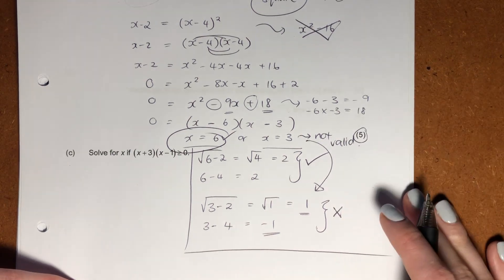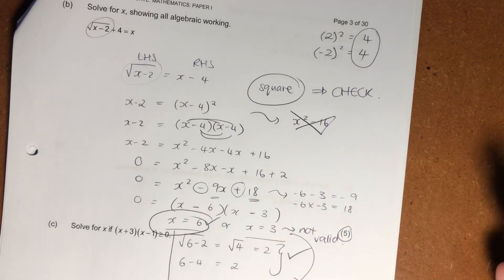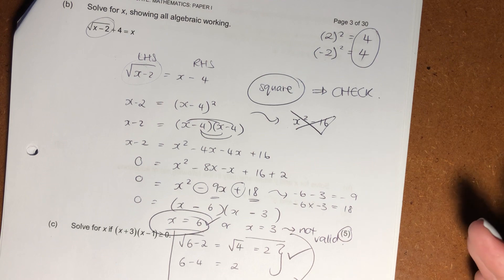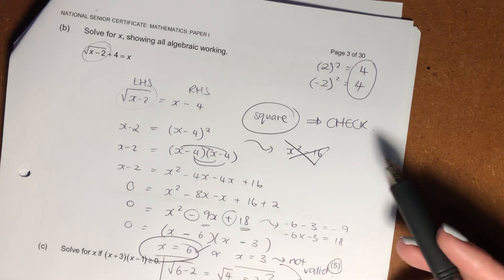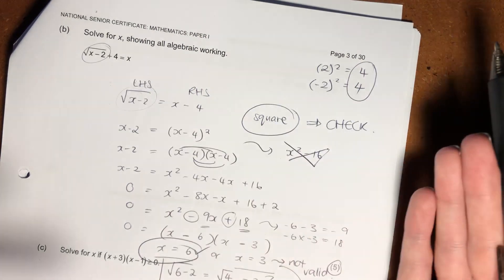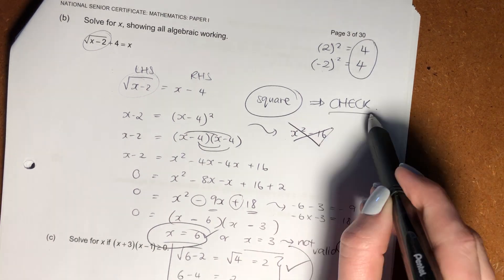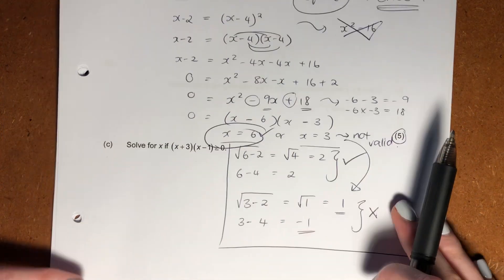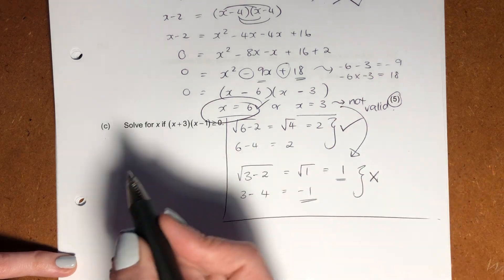So we say here, this is not valid, and my only solution is x equals 6. And that's why this question is out of 5 marks, because it needs you to check. There's marks allocated towards checking. So please don't forget, if you introduce a square when it comes to algebra and you square both sides, you need to go back and check. Let's now go on to our last question here.